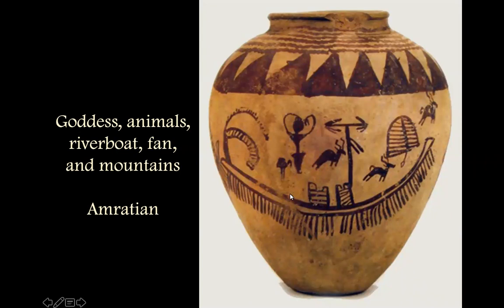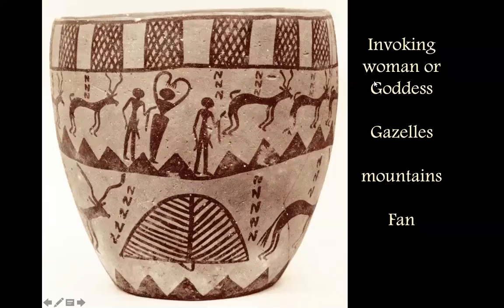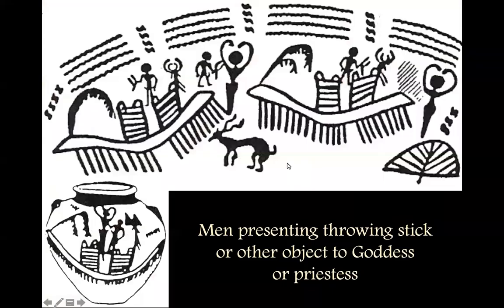These scenes recur many times over in this painted pottery. Sometimes she's standing — she could be standing on one of the cabins — but it looks like she's floating in the air, and often surrounded on the shores by mountain goats or gazelles, sometimes flamingos or other birds, ceremonial fans sometimes. You see the mountains in the distance from the shore showing up.